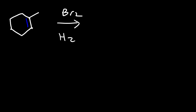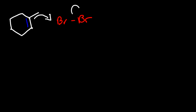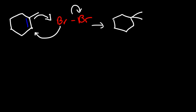Now let's go over the halohydrin reaction. We have 1-methylcyclohexene and we're going to react it with Br2 and H2O. Let's go over the mechanism. The alkene attacks the electrophile, expelling a bromide ion, and bromine also attacks the alkene. Just like before, we get a cyclic bromonium ion intermediate with a positive charge and two lone pairs. Now I want you to understand the resonance structures associated with this bromonium ion.